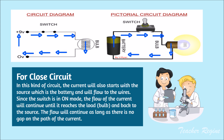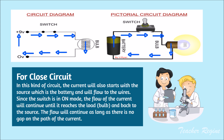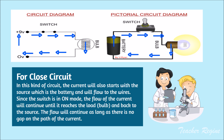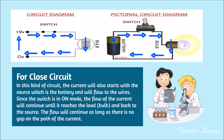For a closed circuit, the current will also start with the source, which is the battery, and will flow through the wires. Since the switch is in on mode, the flow of the current will continue until it reaches the load, which is the bulb, and back to the source. The flow will continue as long as there is no gap on the path of the current.